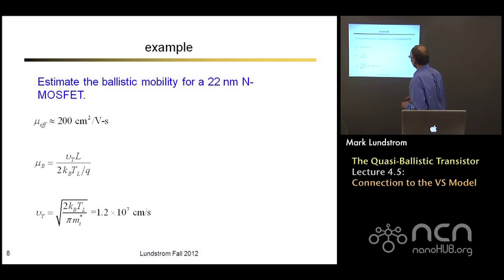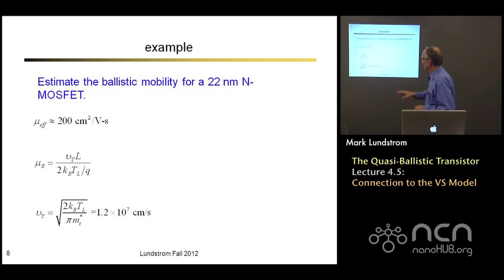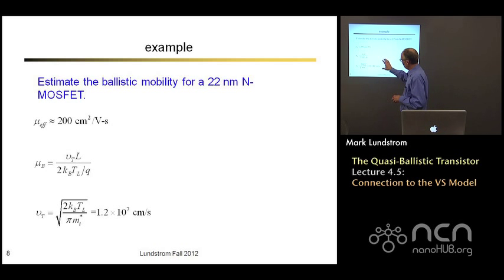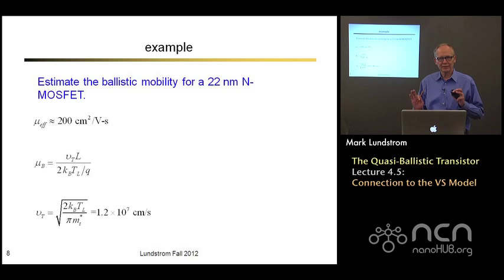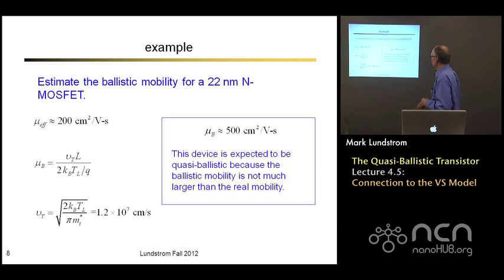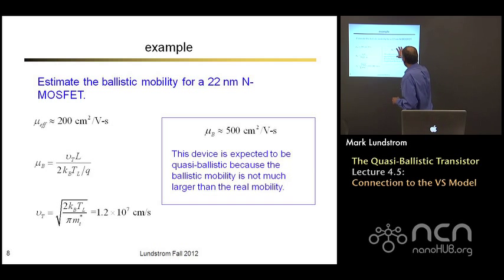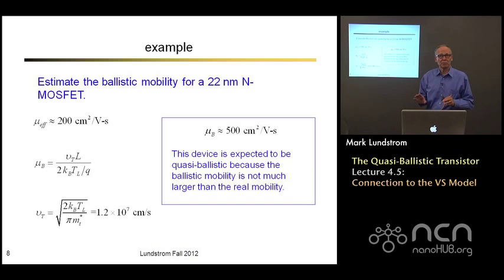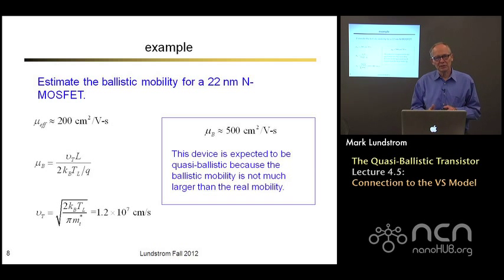As a quick example, let's take a 22 nanometer MOSFET. I'll use a rough value for the mobility — say 200 cm²/V·s. For silicon 100-oriented, the appropriate effective mass is the transverse effective mass, giving a unidirectional thermal velocity of 1.2 × 10⁷ cm/s, assuming Maxwell-Boltzmann statistics. Plugging the numbers in, you get a ballistic mobility of 500 cm²/V·s. Since that's comparable to the real mobility of 200 cm²/V·s, we're in the quasi-ballistic regime — neither fully diffusive nor fully ballistic. That's where modern silicon MOSFETs tend to be today.